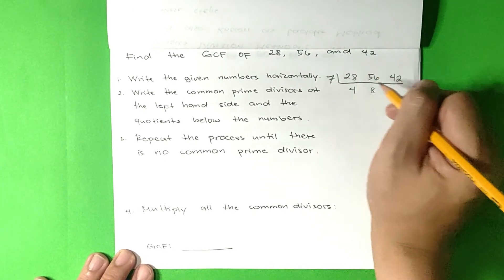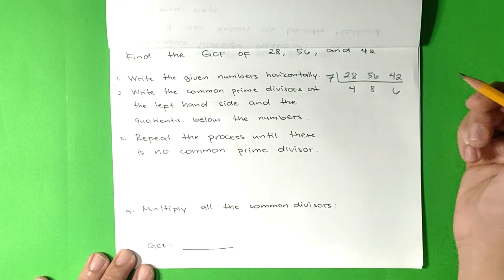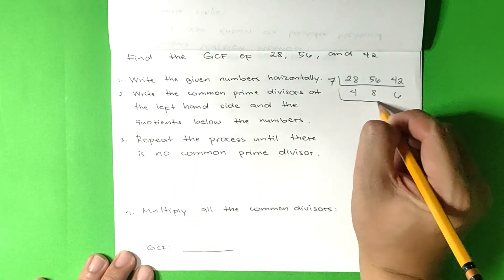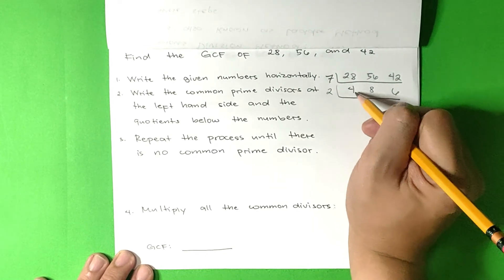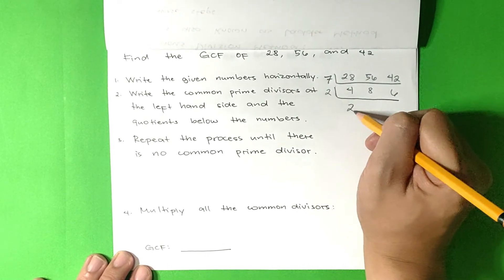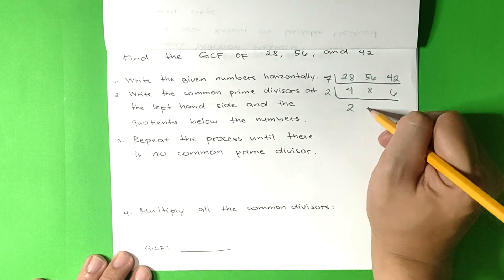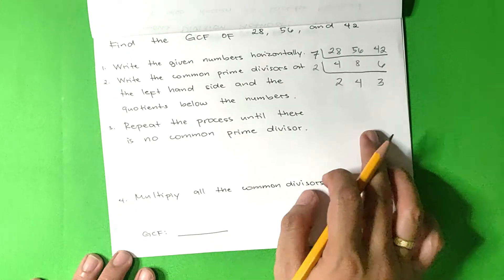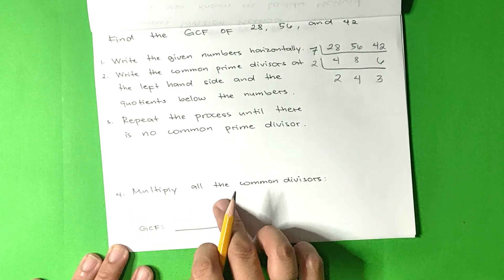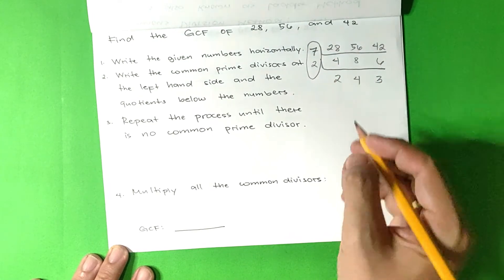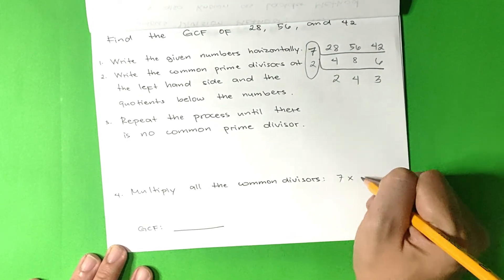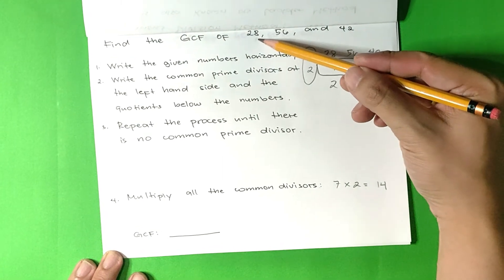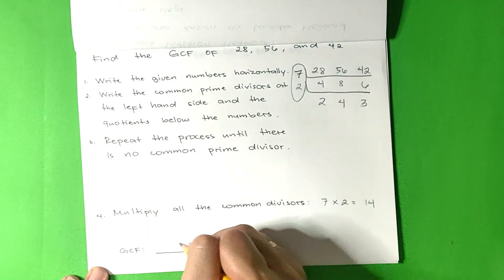Step 3: Repeat the process until there is no common prime divisor. Let us use number 2. 4 divided by 2 is 2. 8 divided by 2 is 4. 6 divided by 2 is 3. The last step is to multiply all common divisors. 7 times 2 is equal to 14. So the GCF of 28, 56, and 42 is 14.